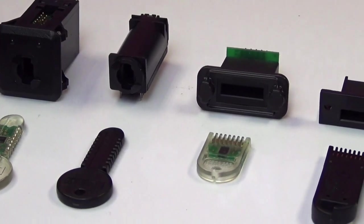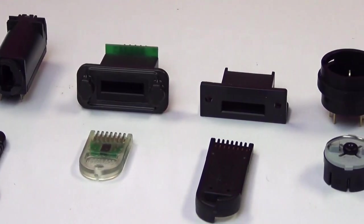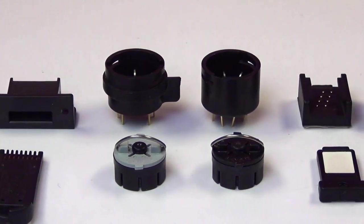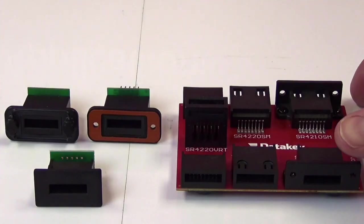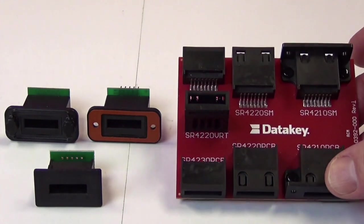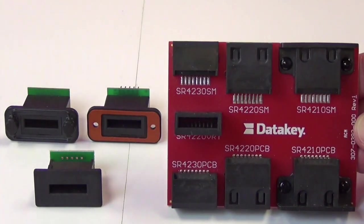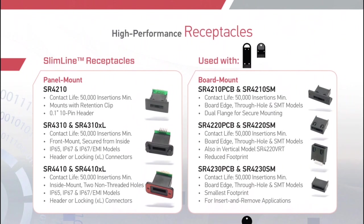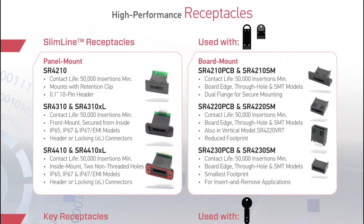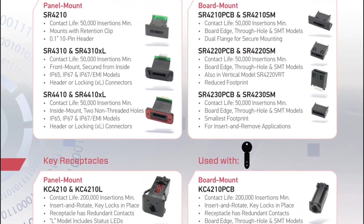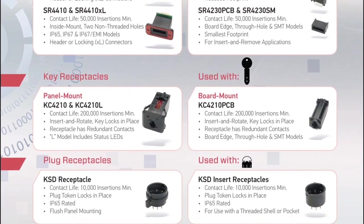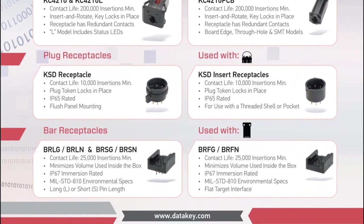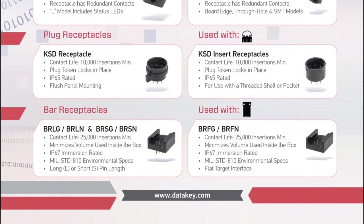As you look at each form factor, you may have noticed that each has a variety of receptacle options. Typically, we offer both panel mount and board mount versions. Here is just a sampling of the panel mount and board mount options for our slimline and extended length slimline token products. The receptacle page from the DataKey brochure, which can be downloaded from the DataKey website, gives a nice overview of the receptacle options available for each form factor. For each receptacle grouping, you will notice an icon showing which form factor the receptacles are used with.